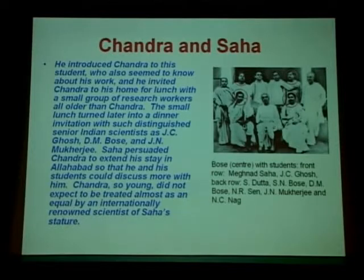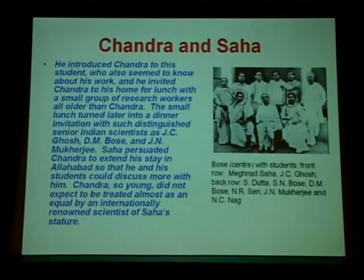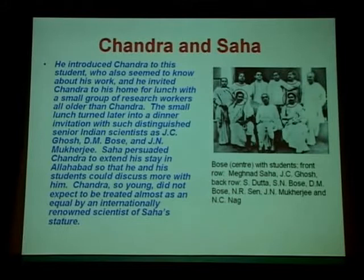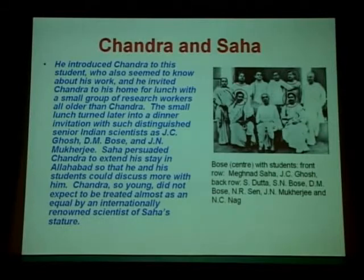Saha invited Chandra to his home for lunch with a small group of research workers, all older than Chandra. This small lunch later turned into a dinner invitation with such distinguished senior Indian scientists as J.C. Ghosh, D.M. Bose, and J.N. Mukherjee. These were the important people of Indian science in those days. Saha persuaded Chandra to extend his stay in Allahabad so that he and his students could discuss more with him. Chandra, so young, did not expect to be treated almost as an equal by an internationally renowned scientist of Saha's stature.